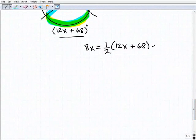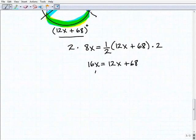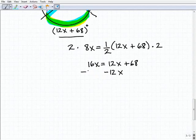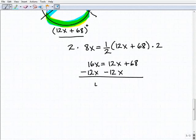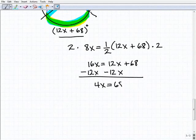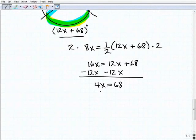What I'm going to do here is multiply both sides of the equation by 2, just to get rid of this one half, and I'll get 16x equals 12x plus 68. Now when I subtract 12x from both sides of the equation, I get 4x equals 68. When I divide both sides by 4, I solve for x. So x equals 17.